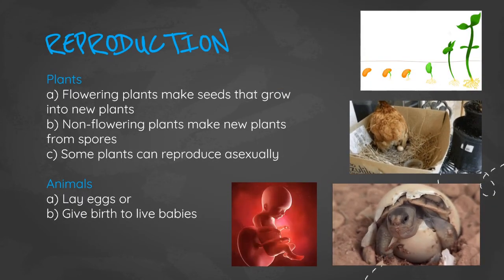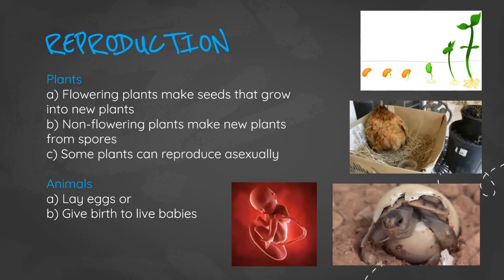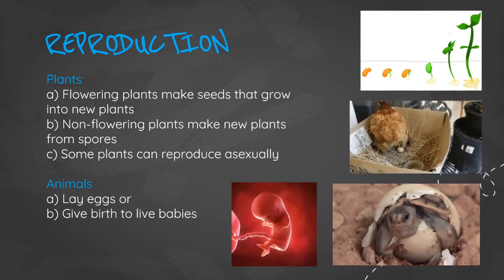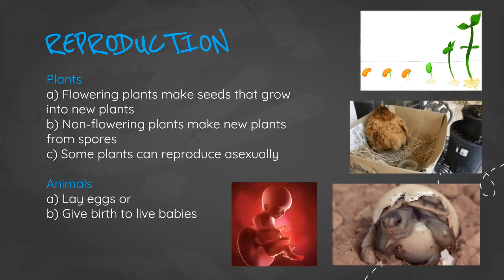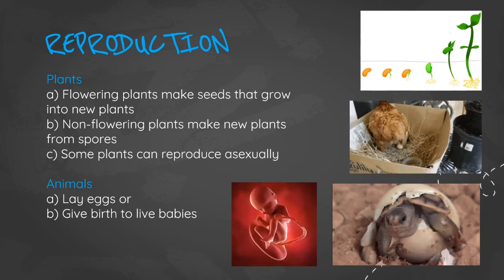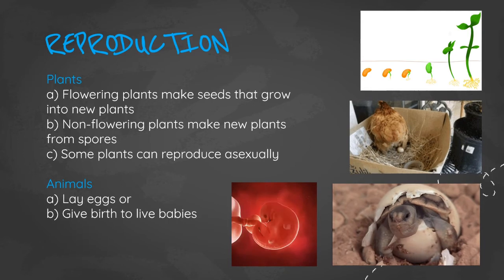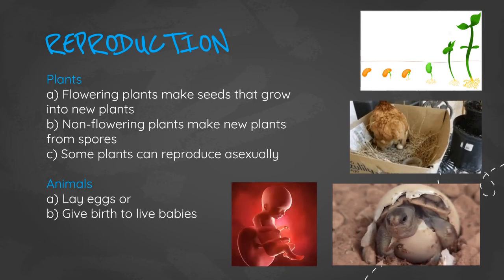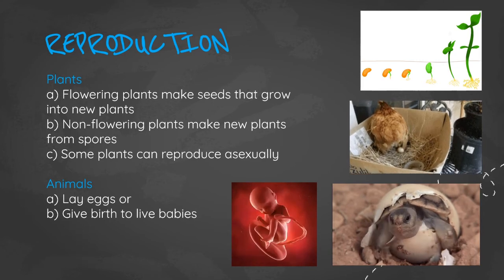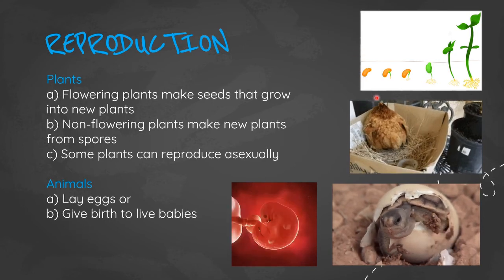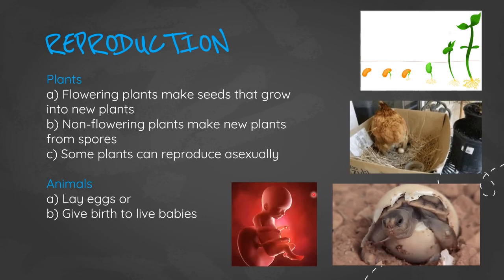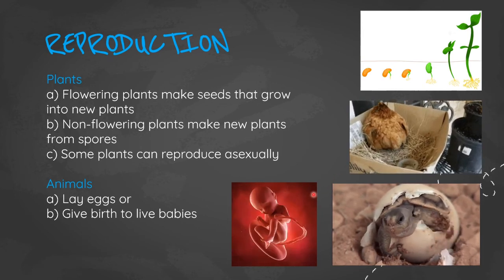Reproduction. Plants, specifically flowering plants, make seeds that grow into new plants, and non-flowering plants make new plants from spores. Some plants reproduce asexually, for example strawberries. In animals they may either lay eggs or give birth to live babies. The hen will lay eggs while in humans, for example, birth is given to a live baby.